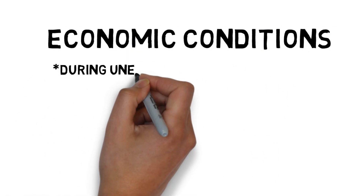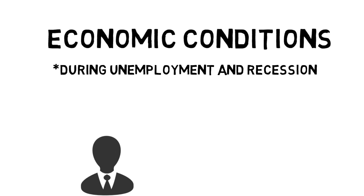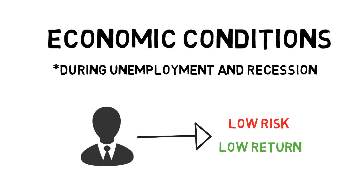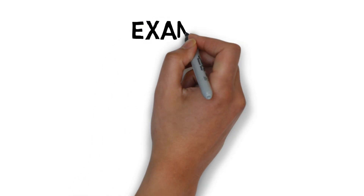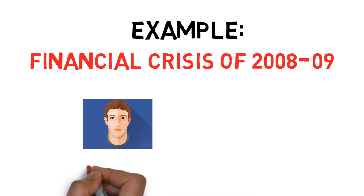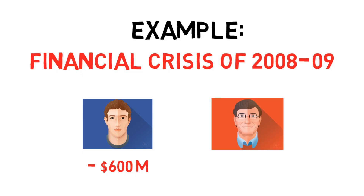Economic conditions also dictate the amount of risk investors are willing to take on. If the economy is in recession or if unemployment is high, investors will be less inclined to purchase risky securities and will thus expect lower returns during that trading season. For example, during the recession of 2008, Mark Zuckerberg lost $600 million and Bill Gates lost $18 billion. The market crash, the recession, and increasing levels of unemployment resulted in a bear market in which investors targeted low-risk and low-yield securities.